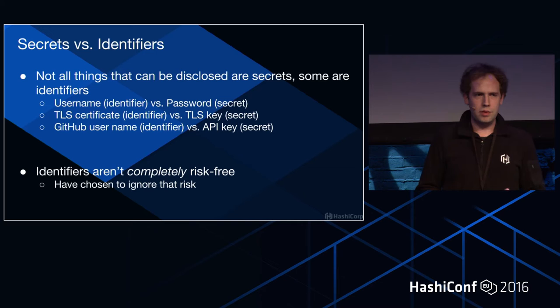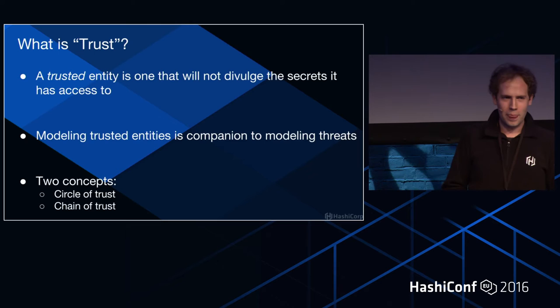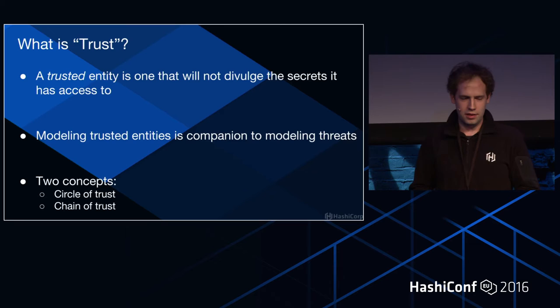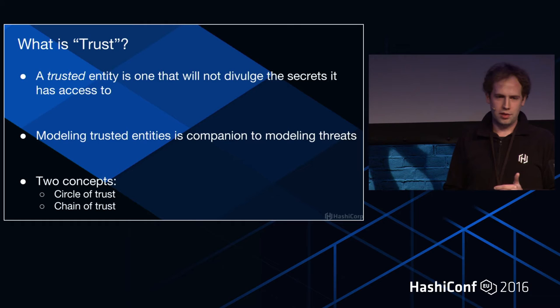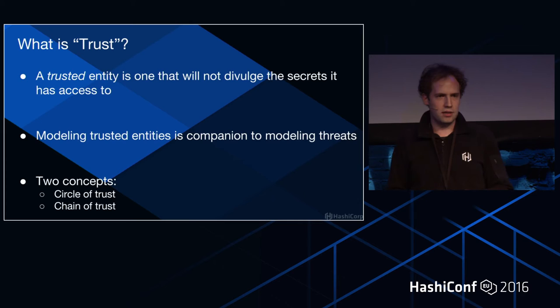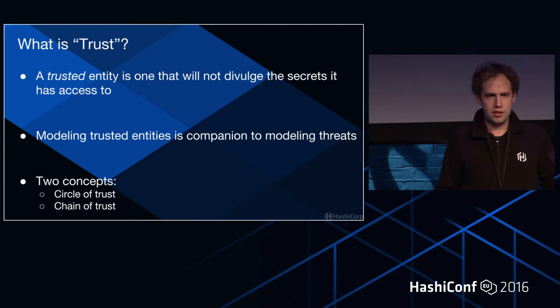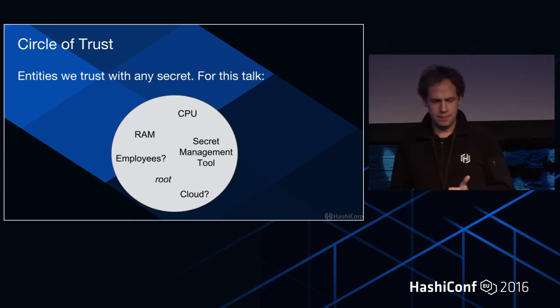Fourth slide: what is trust? A trusted entity is one that will not divulge the secrets it has access to, at least not willingly. When you model trusted entities, it's the counterpart to modeling threats. There are two concepts: a circle of trust and a chain of trust. Circle of trust are entities that we trust with any secret — your CPU, your RAM, your secret management tool, employees potentially, your root user.